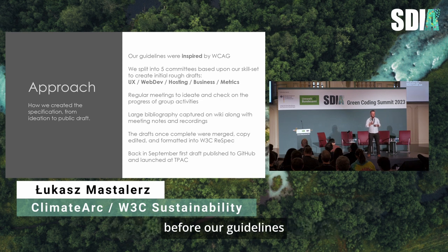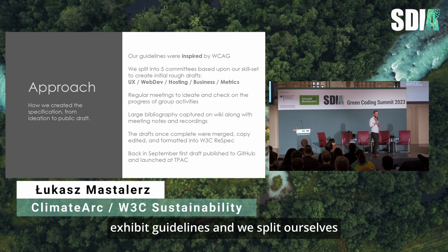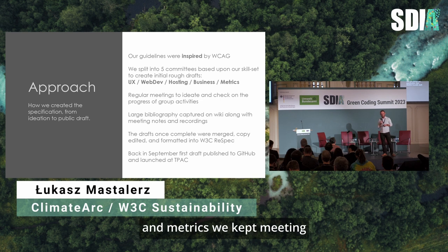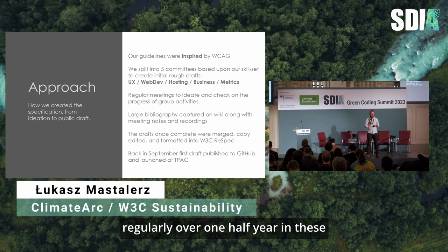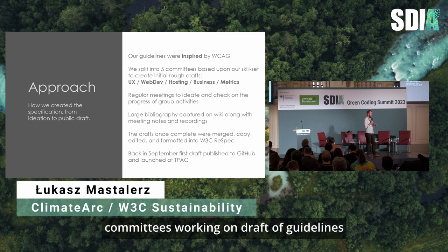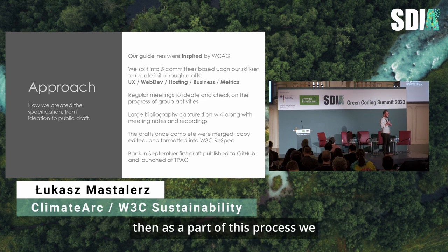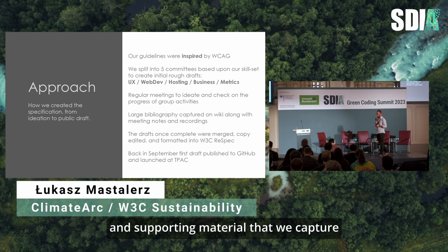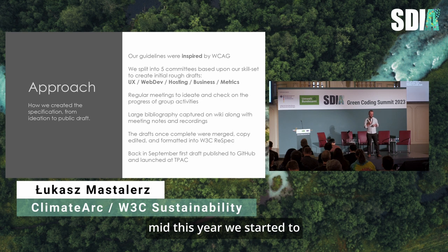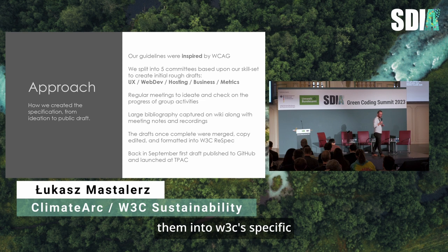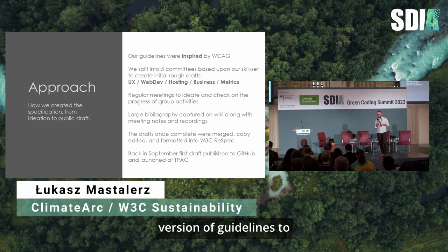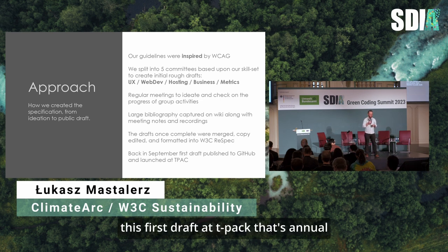Our guidelines were inspired by the web content accessibility guidelines, and we split ourselves into five different committees: user experience, web development, hosting, business, and metrics. We kept meeting regularly over one and a half years in these committees working on draft guidelines. We compiled a large bibliography of references, examples, and supporting material captured on our wiki. Around mid-year we started compiling all these guidelines and formatted them into W3C's respec format. Then back in September, we published the first version to GitHub and officially launched the first draft at TPAC — the annual W3C conference, which this year was held in Sevilla, Spain.